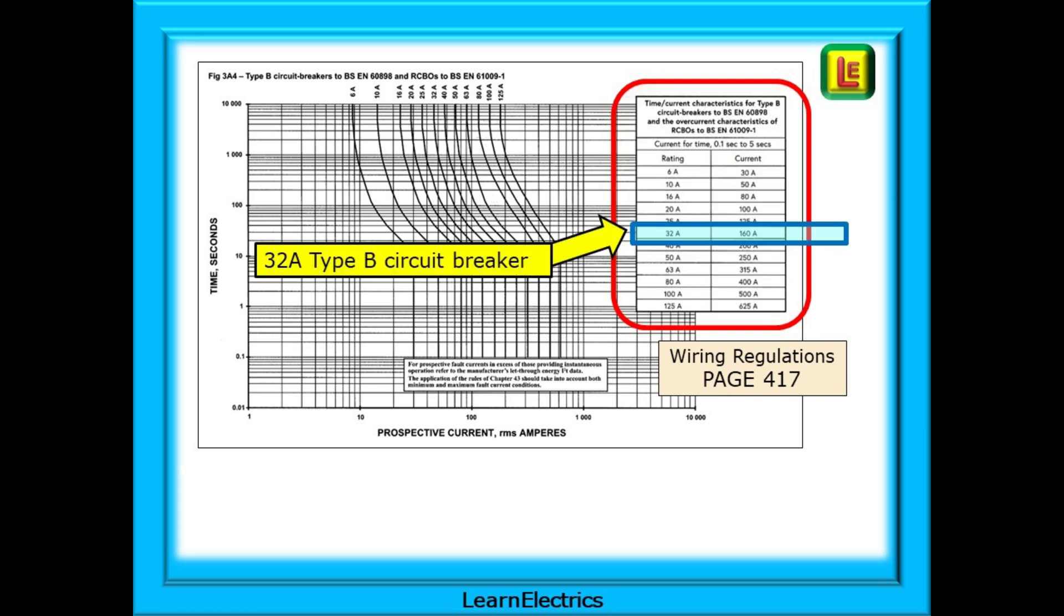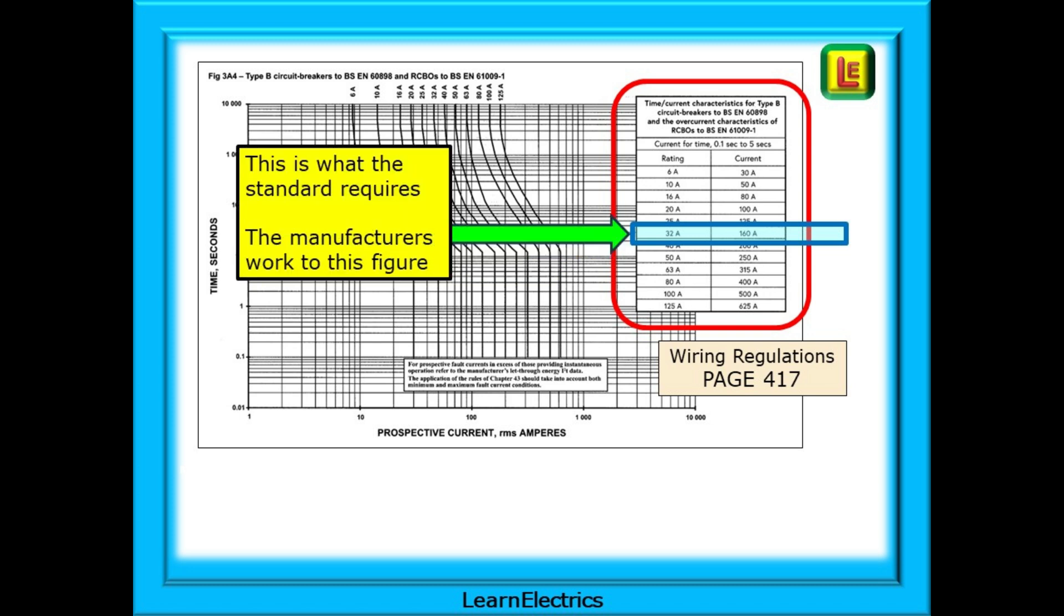Let's follow the ZS story for a 32 amp type B circuit breaker as shown here. This tells us that a 32 amp breaker with 160 amps of fault current flowing through it will trip in about 0.1 seconds. This clearly covers our requirement for the circuit to disconnect in 0.4 seconds or less for final circuits. If it trips in 0.1 seconds then it will also meet the five seconds or less disconnection time for distribution circuits.